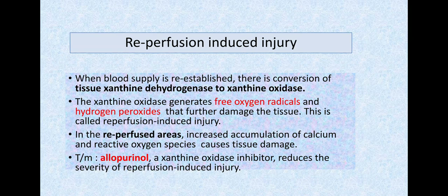In reperfused areas we have calcium accumulation, reactive oxygen species, and inflammatory changes causing tissue damage. Treatment is allopurinol, a drug given for gout. Its mechanism in shock: it's a xanthine oxidase inhibitor that reduces reperfusion-induced injury severity.